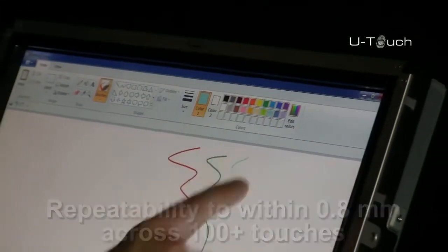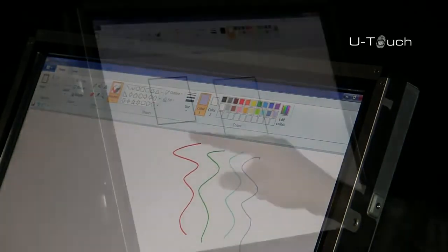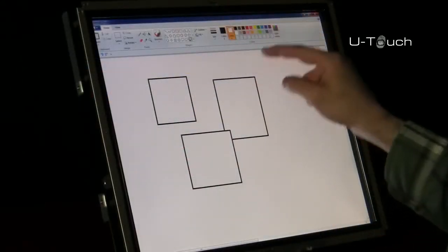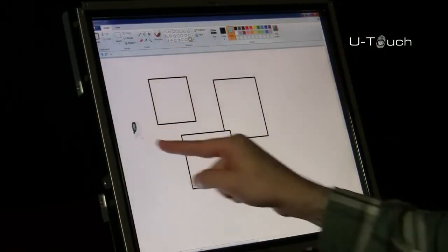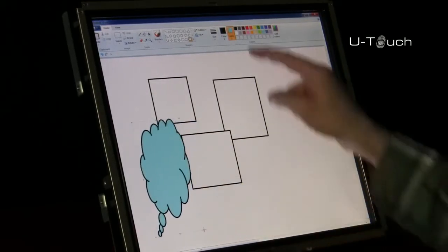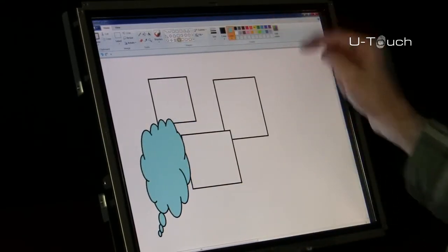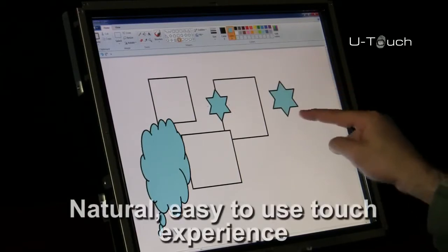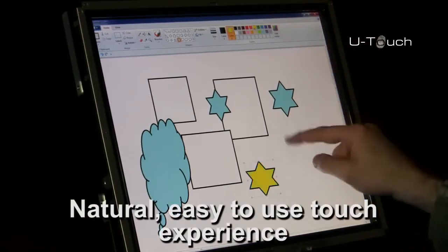Touch objects are sensed as they cross an optical plane on the screen. This means that there is no dependence on the touch material, whether bare or gloved fingers, or how hard the screen is pressed. The result is a natural, easy to use touch experience regardless of the application.